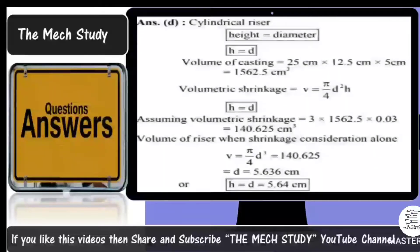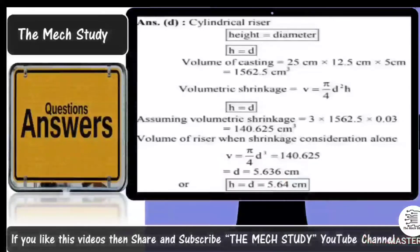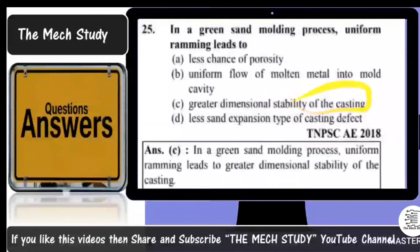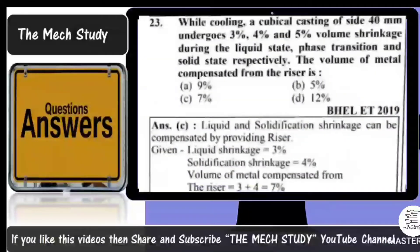For the solution, remember that height equals diameter. First calculate the volume of the casting: 25 × 12.5 × 5. Then calculate the volume of the cylindrical riser using V = (π/4) × D² × H, and since H = D, substitute accordingly. You will have only one unknown, which is the diameter.